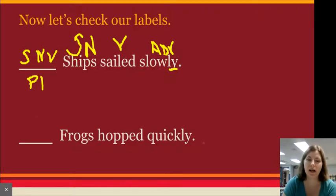Okay. Now, let's look at our frogs hopped quickly. What hopped quickly? Notice how I say what and not who, because it's an animal, not a human. Frogs would be our subject noun. What is being said about frogs? Frogs hopped. Verb.